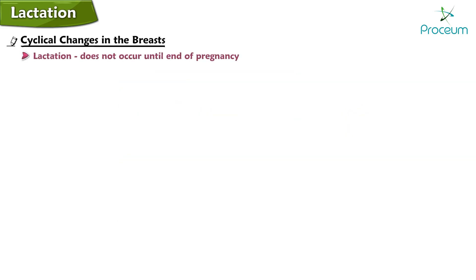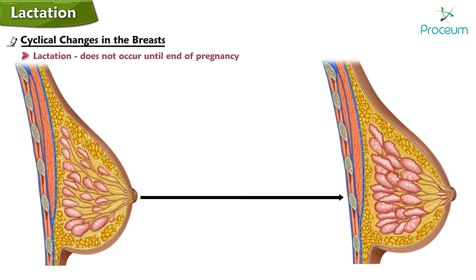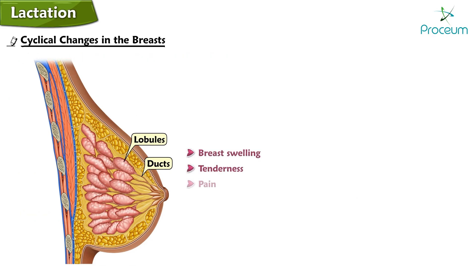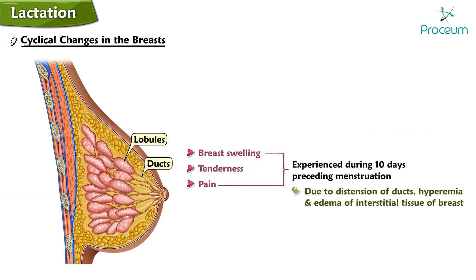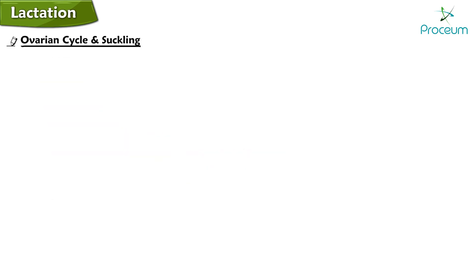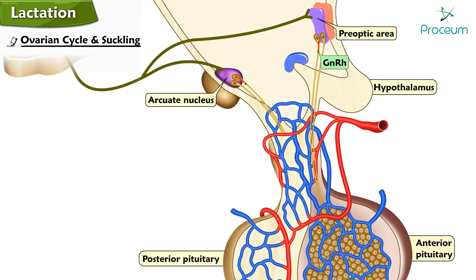Lactation normally does not occur until the end of pregnancy. During the menstrual cycle, estrogen causes proliferation of mammary ducts, whereas progesterone causes growth of lobules and alveoli. Breast swelling, tenderness, and pain experienced by many women during the 10 days preceding menstruation are probably due to distension of the ducts, hyperemia, and edema of the interstitial tissue of the breast. All these changes regress along with the symptoms during menstruation.